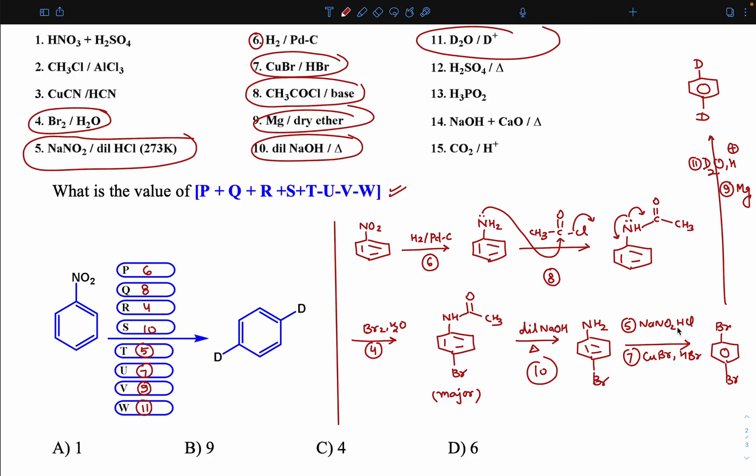Now simply check: what is P? 6. This is 8. This is 4. S is 10. This one is 5, 7, 9, and 11. Now you can easily solve this question. Just simply solve this sum, you will get the answer.